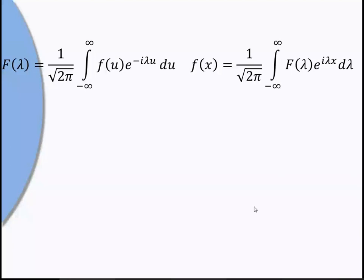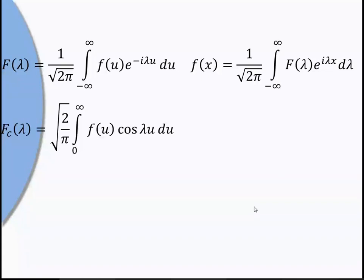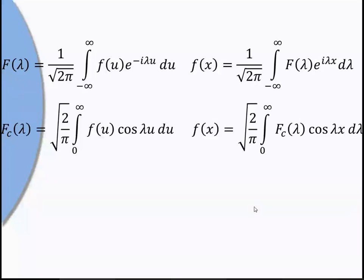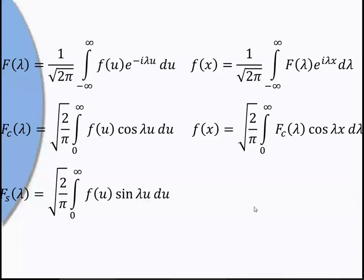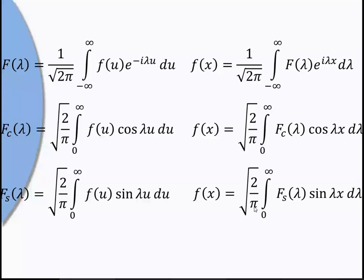The Fourier cosine transform is fc(λ) = √(2/π) ∫_0^∞ f(u) cos(λu) du, with inverse f(x) = √(2/π) ∫_0^∞ fc(λ) cos(λx) dλ. The Fourier sine transform is fs(λ) = √(2/π) ∫_0^∞ f(u) sin(λu) du, with inverse f(x) = √(2/π) ∫_0^∞ fs(λ) sin(λx) dλ. So we have these three types of formulas.